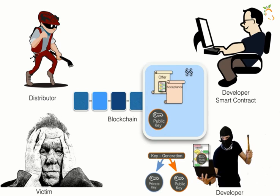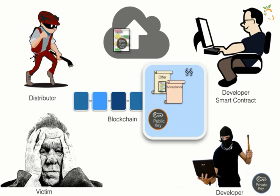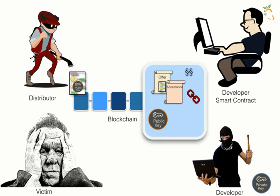The private key will be stored in a secret location by the ransomware developer. Next, the distributor needs to obtain the ransomware software together with the encryption key. The developer of the ransomware puts the software on a cloud service and sends an encrypted link to the smart contract. The distributor can then download the software from the cloud location.